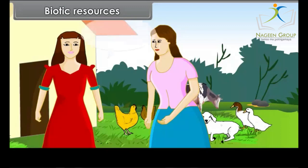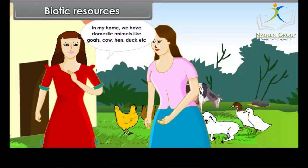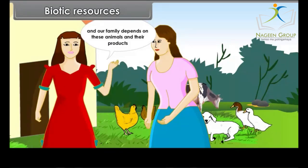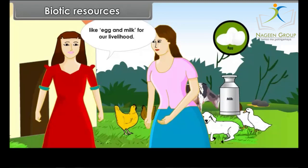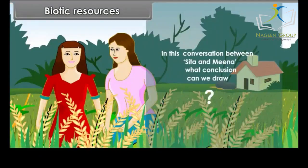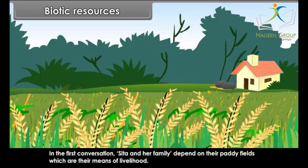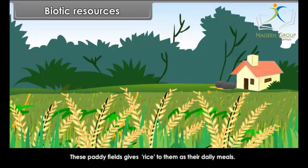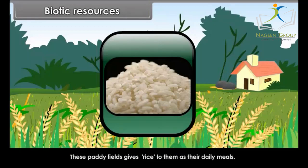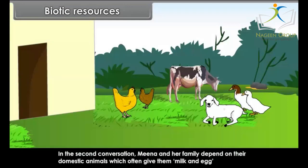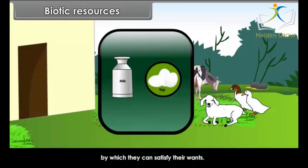Sita says: This square plot of land with paddy cultivation is our livelihood. My father is a farmer; these paddy fields give us rice, which is our means of livelihood. Meena says: In my home, we have domestic animals like goats, cow, hen, duck, etc. Our family depends on these animals and their products like egg and milk for our livelihood.